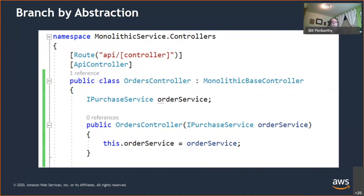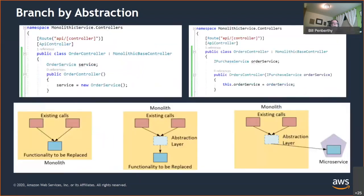Note how the abstraction is named for what its future implementation will be. This helps bring the idea of the future ubiquitous language — how you'll communicate between the business and technology — sooner, even in an area that will probably be replaced. I'm a big fan of ubiquitous language and getting the same understanding of words and terminology between technology and business. The Branch by Abstraction layer adds a new abstraction that allows you to replace the implementation behind it — shown here as a microservice.